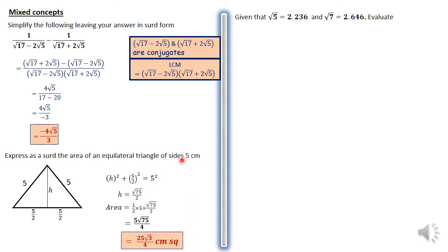Moving on to that question, we have given that root 5 is 2.236 and root 7 is 2.646. Evaluate this expression here. Let me say root 20 is known as 2 root 5.